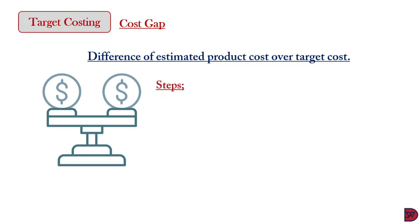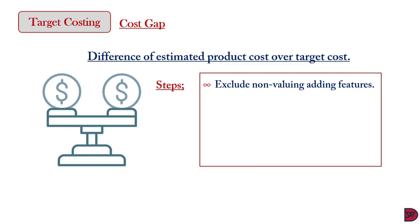To eradicate the cost gap: first, non-essential features of the product must be eliminated. Any feature — like packaging or functionality — that is not critical to the customer's buying decision can be cut. For example, medicinal products are patronized for their effects with minimal emphasis on packaging sophistication, so packaging costs can be reduced. Second, the profit margin can be reviewed downwards — say from 20% to 10% — to push the target cost upwards and close the gap.